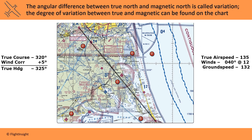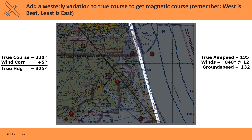We'll then need to adjust the true heading for magnetic variation. Remember that the chart has isogonic lines that tell us what the variation is in a particular area? This one is 11 degrees west. West is best, east is least — this helps us remember we need to add 11 to the true heading of 325 to get a magnetic heading of 336 degrees.